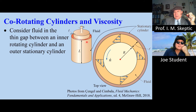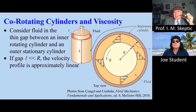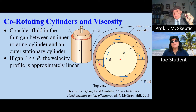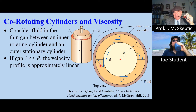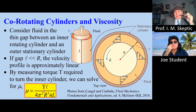Now consider an axisymmetric version of this: a rotating inner cylinder and a stationary outer cylinder with a gap of fluid in between. This is not to scale, but if the gap width is small — L much less than r — then the velocity profile is approximately linear, just like with the parallel plates. We can measure the torque required to turn this inner cylinder at a constant RPM, then solve for mu. We get mu proportional to torque.